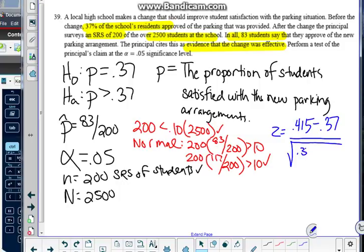So 0.37 times 1 minus 0.37, 0.63. And we divide that by my sample size. Be careful that you are using the sample size and not the population size here. That's a very common mistake. So go ahead and punch that into your calculator.